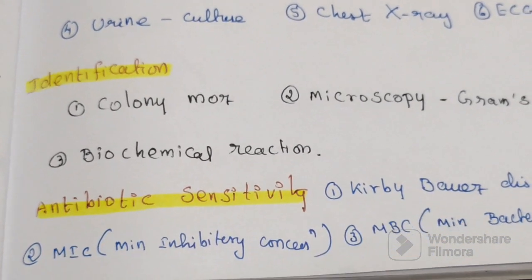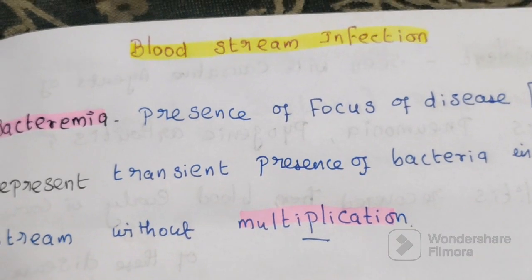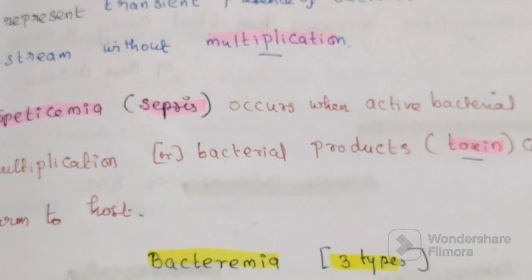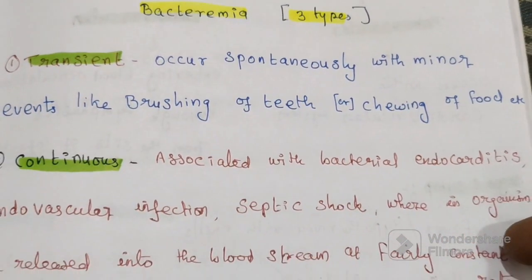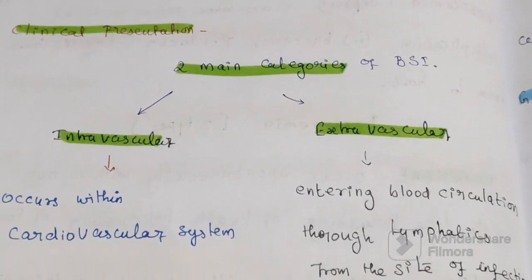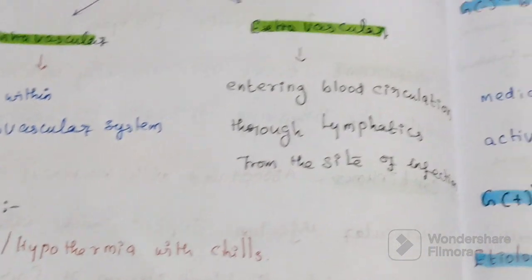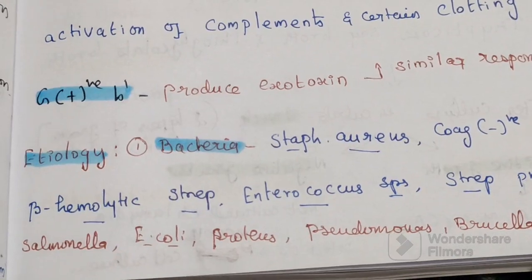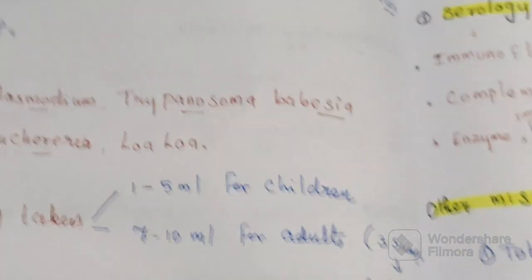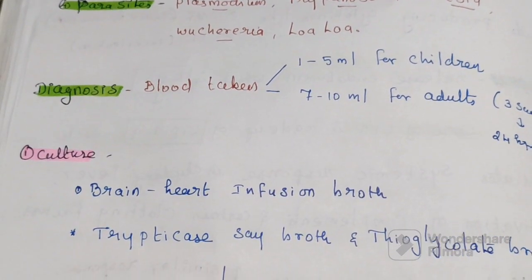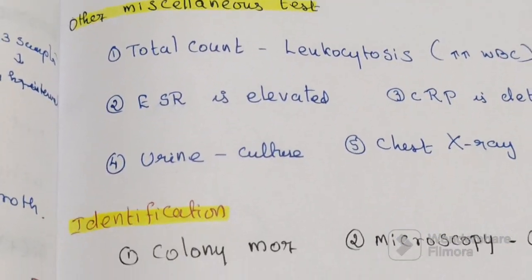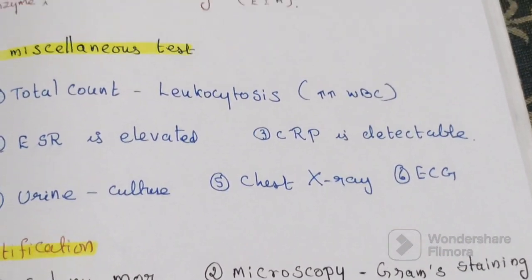In this video, we discussed bloodstream infection, covering the terms bacteremia and septicemia, the three types of bacteremia (transient, continuous, and intermittent), clinical presentation (intravascular and extravascular), signs and symptoms, pathophysiology, gram-positive and gram-negative bacteria, etiology including bacteria, fungi, viruses, and protozoa, and diagnosis using culturing methods, serological techniques, miscellaneous tests, identification, and antibiotic sensitivity methods. Thanks for watching.